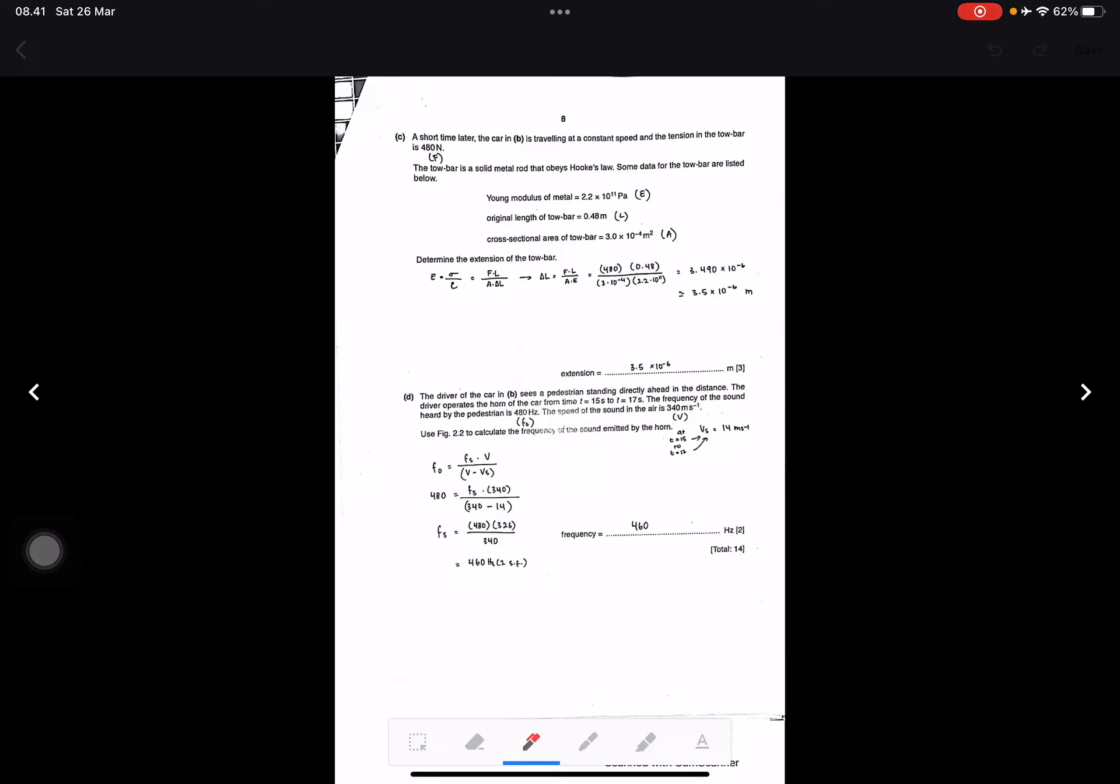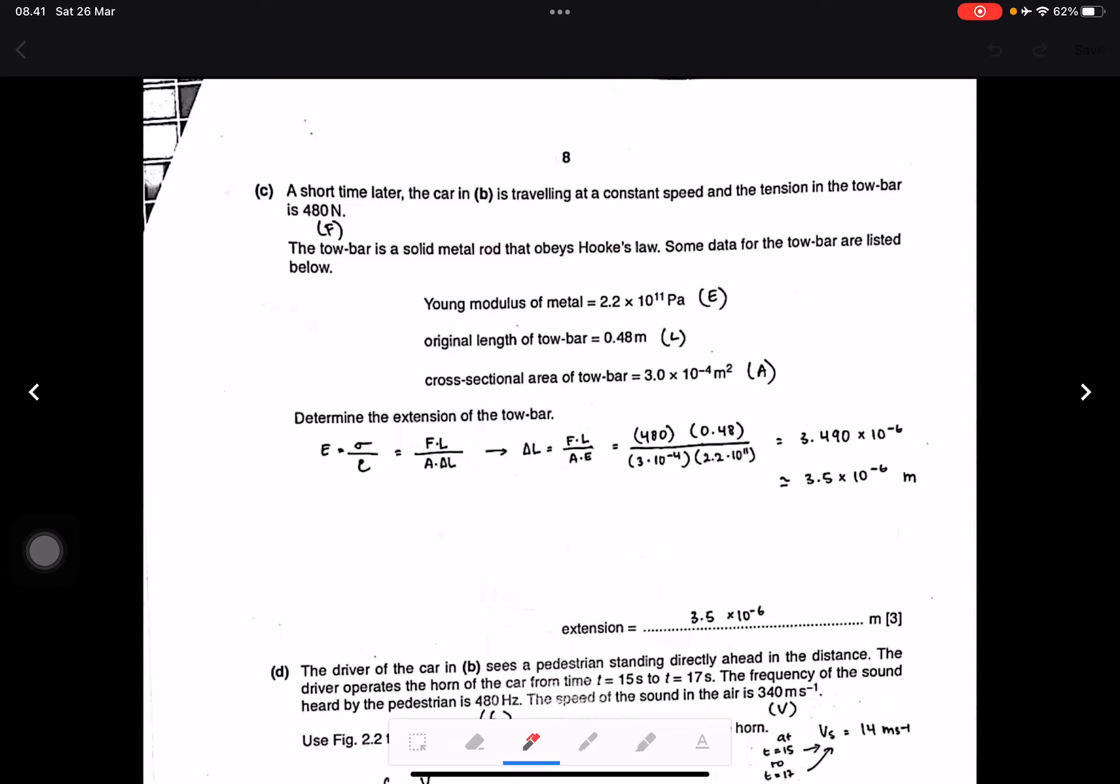Question C: A short time later, the car is traveling at constant speed and the tension in the towbar is 1480 newtons. The towbar is a solid metal rod that obeys Hooke's law. Data for the towbar: Young's modulus of metal 2.2 times 10 to the power 11 pascals, original length L, and cross-sectional area 3.0 times 10 to the power negative 4 meters squared.